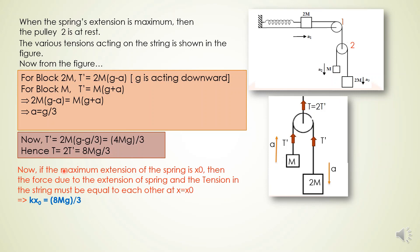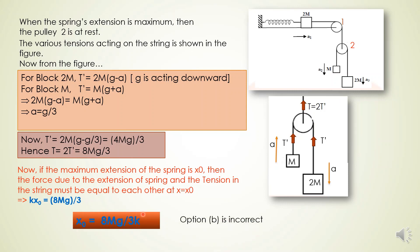If the maximum extension of the spring is x0, then the spring force kx0 must equal the tension T at x equals x0. So kx0 equals 8mg by 3, which implies x0 equals 8mg by 3k. Therefore option B, which states x0 equals 4mg by k, is incorrect.